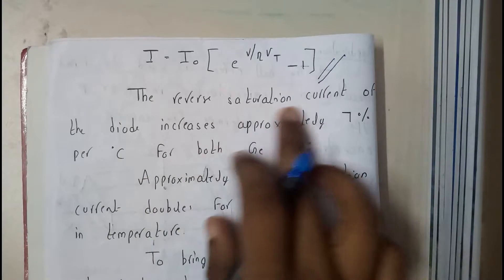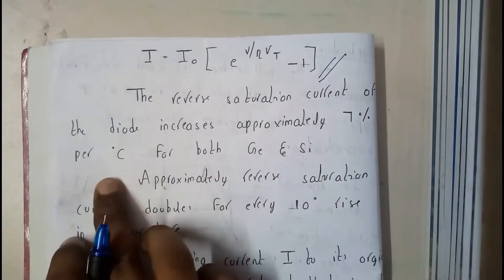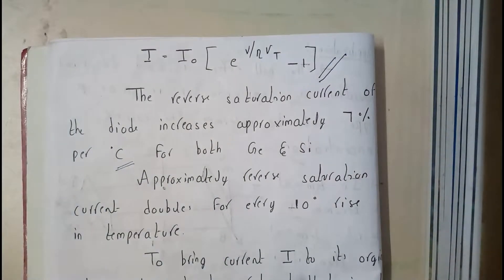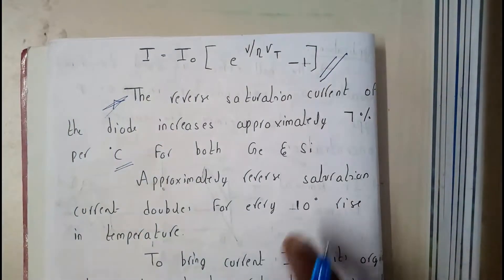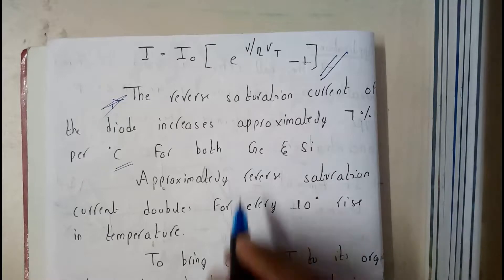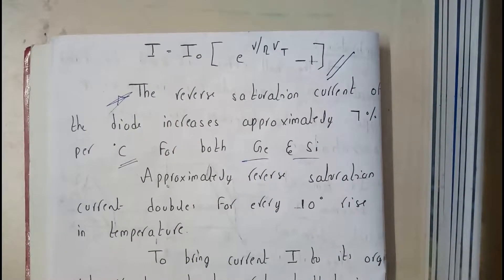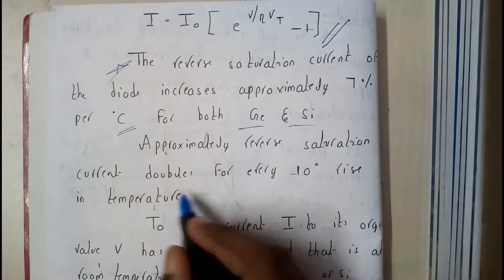The reverse saturation current of the diode increases approximately 7% per degree Celsius for both germanium and silicon. Approximately, the reverse saturation current doubles for every 10 degrees Celsius.